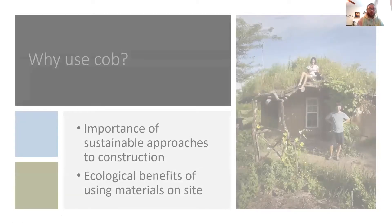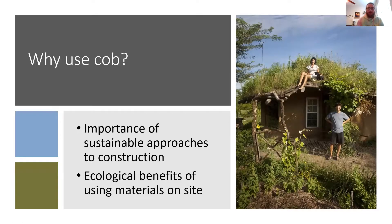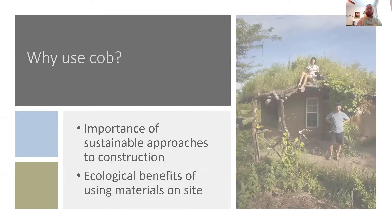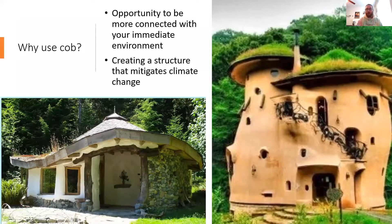There are a couple of reasons you may want to choose cob as a building material. There's a growing interest among builders to find sustainable methods of construction. Cob is super environmentally friendly — unlike some materials that can off-gas, with cob you don't have to worry about toxic materials. There are also benefits from using materials you find on site, including creating a structure that aesthetically fits into its immediate environment. Building with cob also helps mitigate climate change due to the low embodied energy costs of the materials, which can help cut down on the overall carbon footprint.